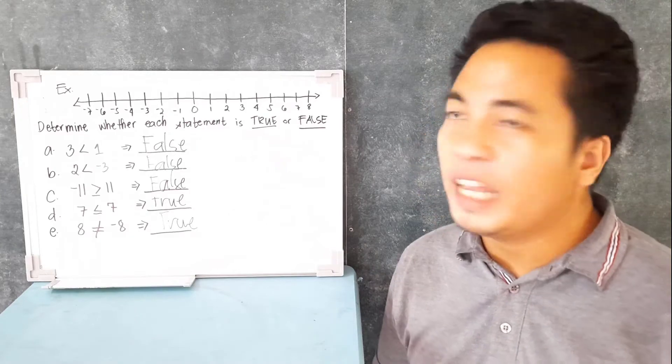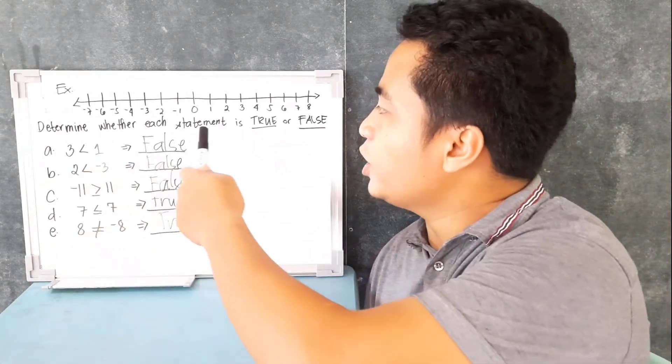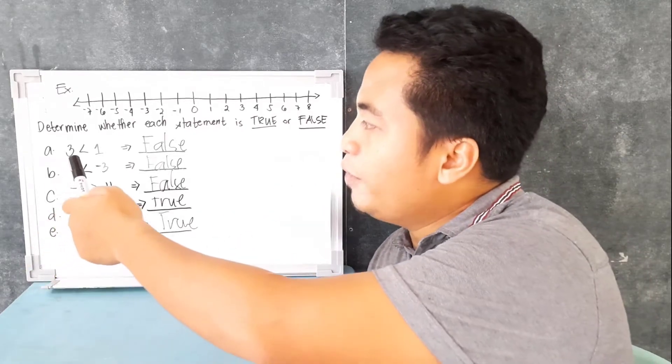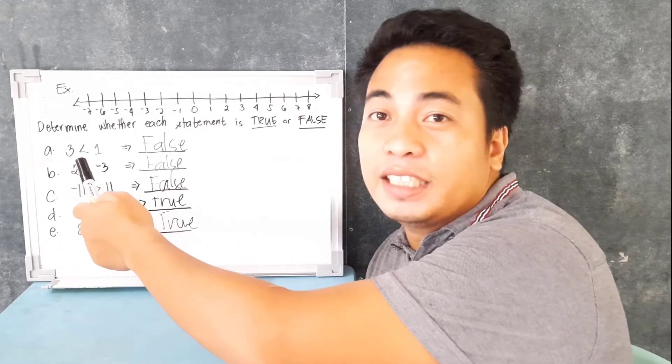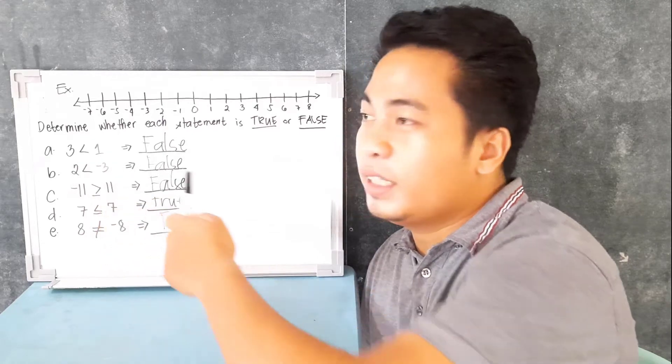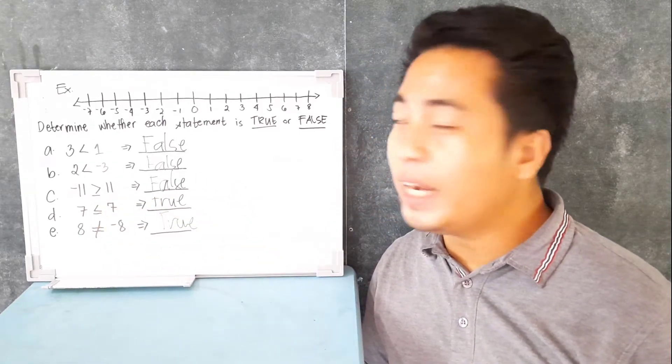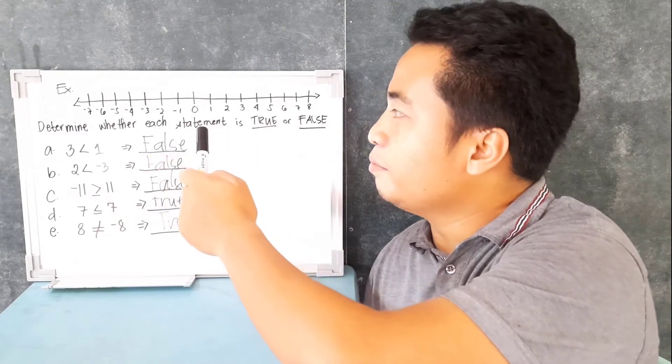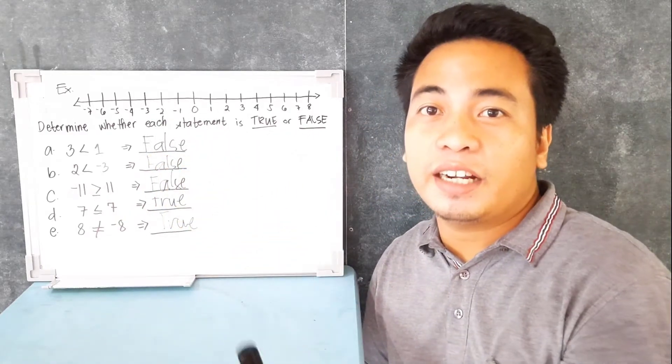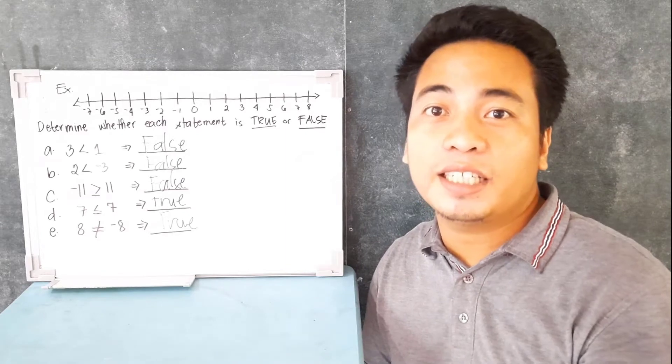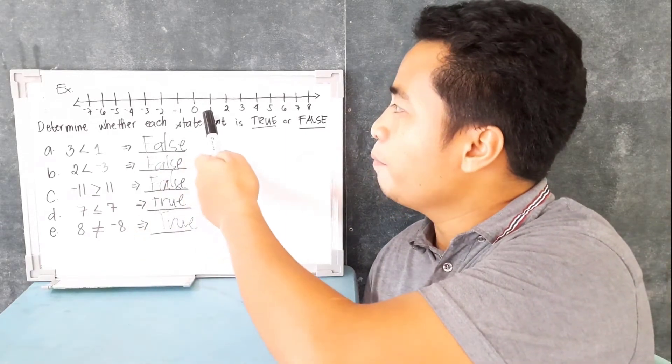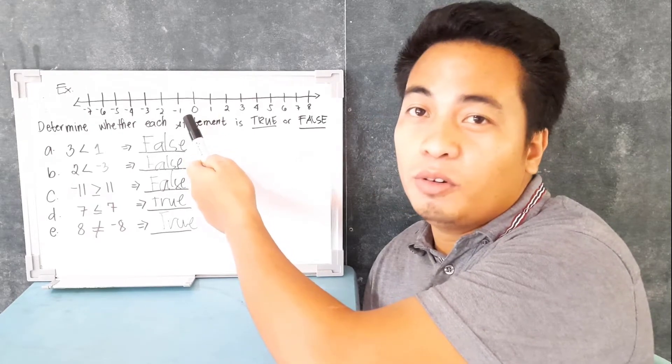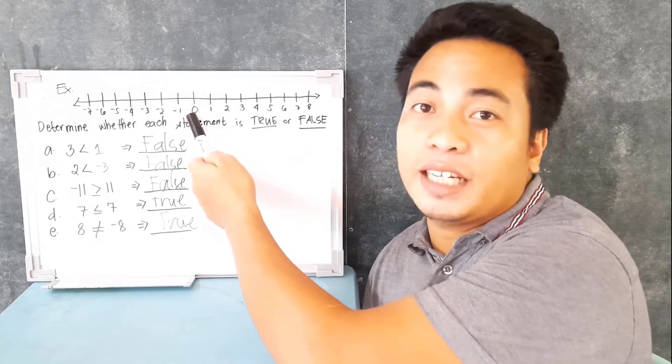Let's have an example. Determine whether each statement is true or false. If you have here 3 is less than 1, is it true or false? Now you can verify that by looking at the number line system. All numbers in the right side of that number are greater numbers. For example, if you have 1 here, 1 is greater than 0. Why? Because 1 is in the right side of 0.